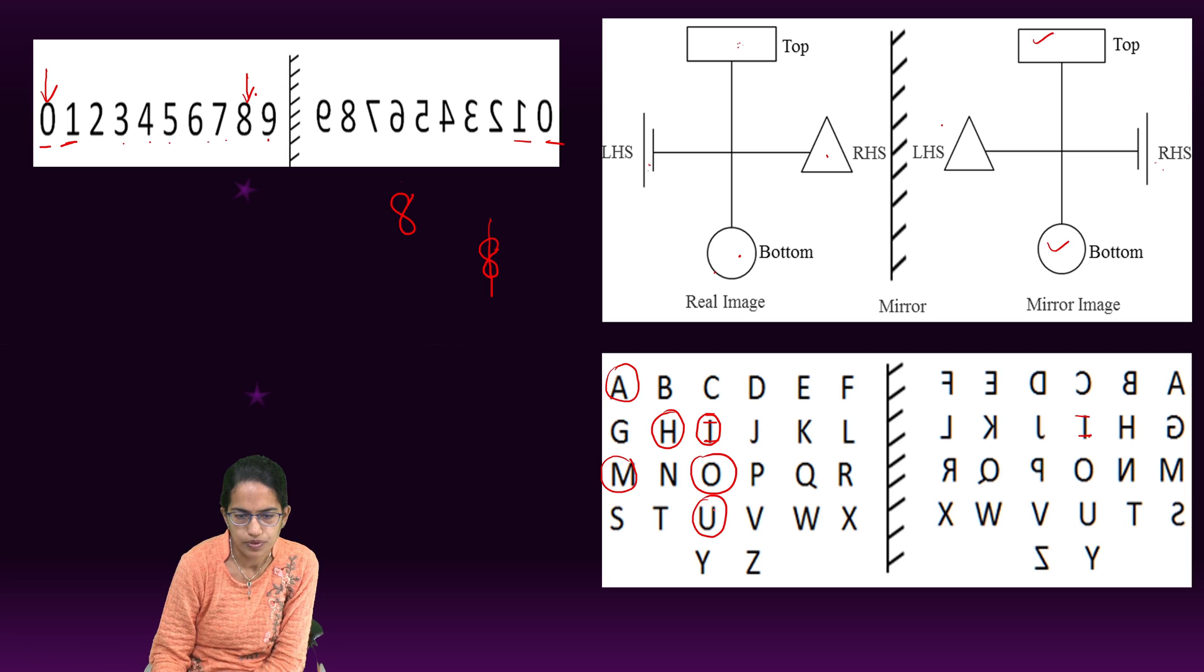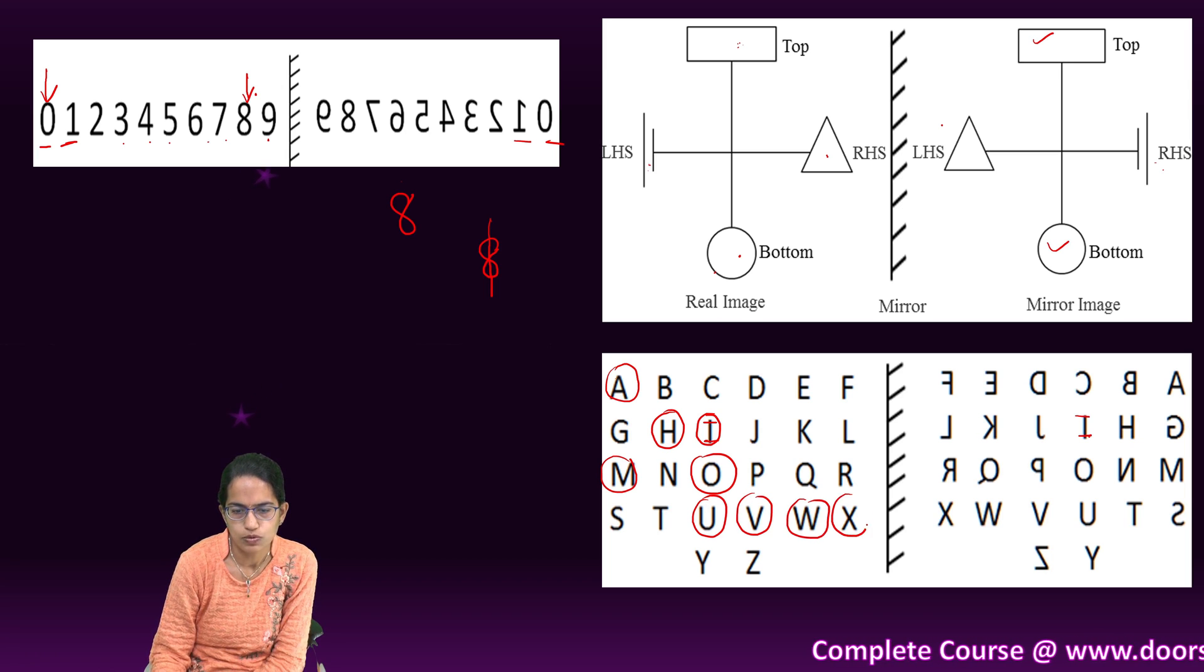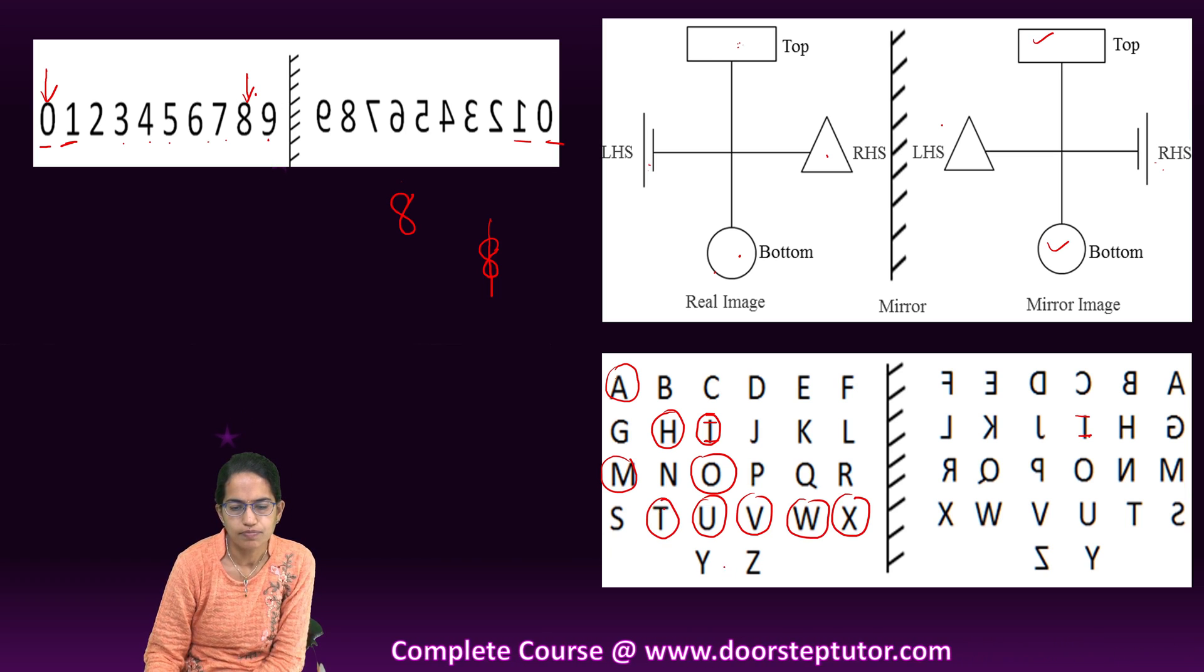U would remain the same, V would remain the same, W would remain the same, X would remain the same, T would indeed remain the same, and then Y would remain the same, Z would change.